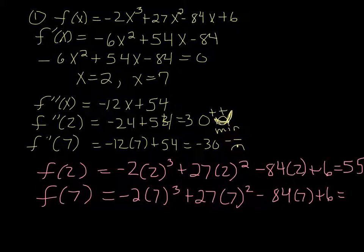I think I have this backwards. I'm sorry. This one's -70 and this one's 55. So f(7) is 55, f(2) is -70. So your min is -70, max is 55.